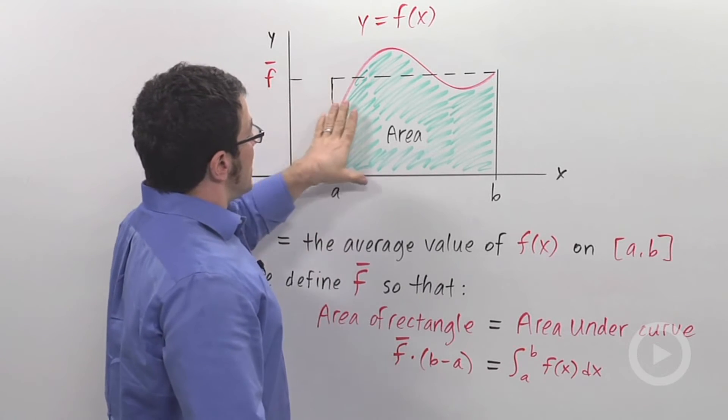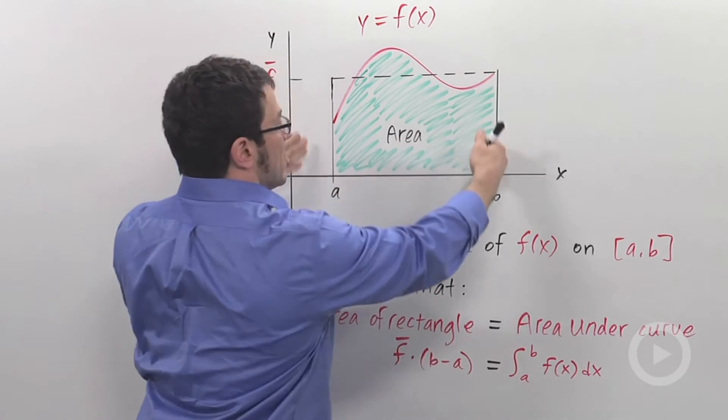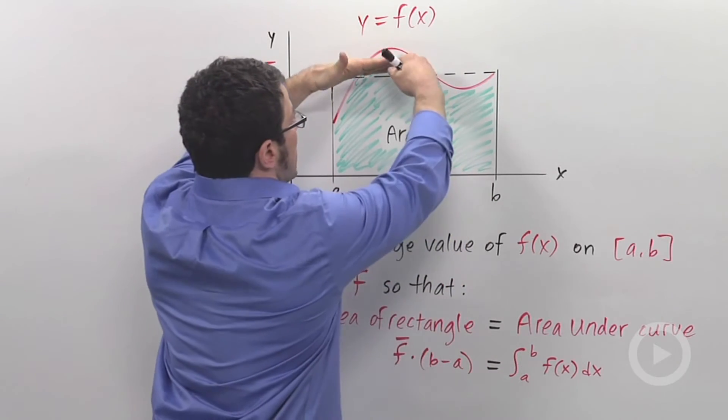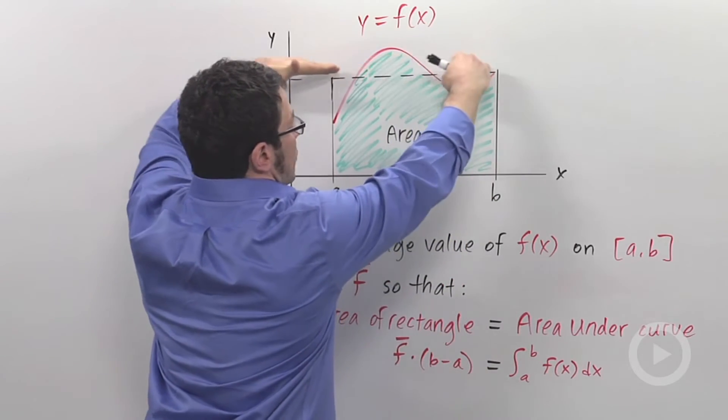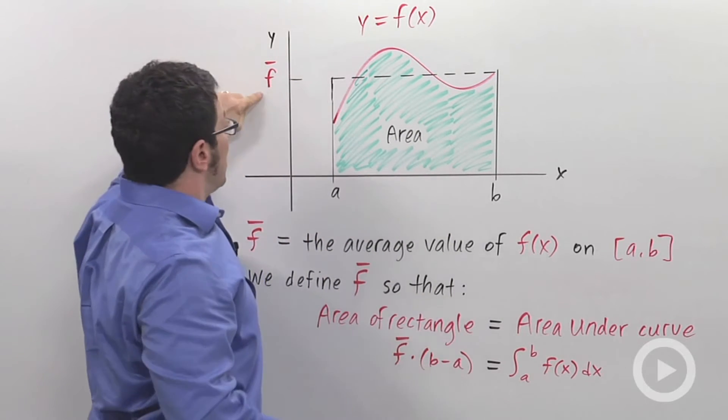That area is going to be determined by the value of the integral of this function from a to b. Now imagine that this region is a body of water sitting in a tank. And when the water settles, it'll find a level.